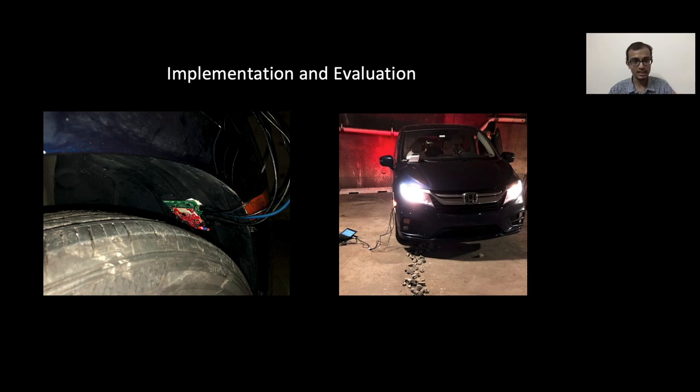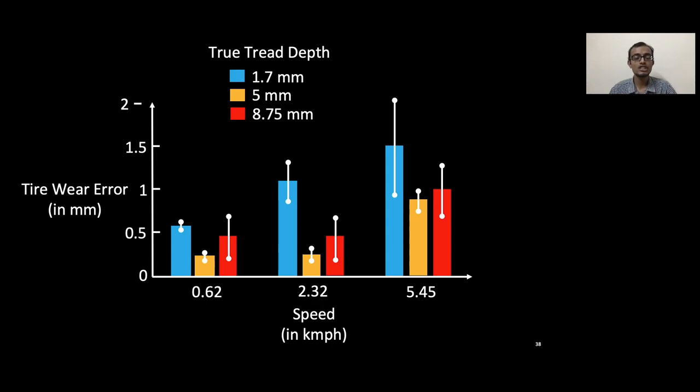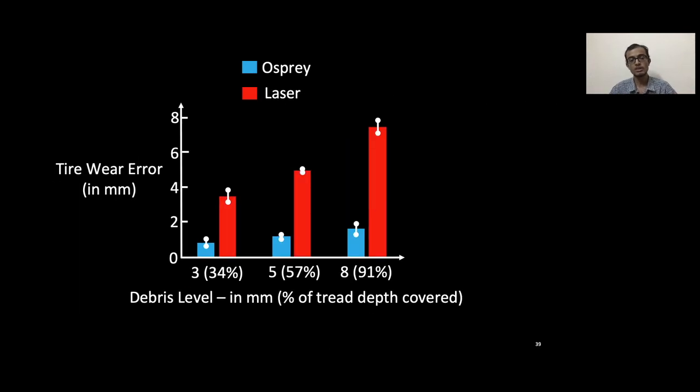Today we would like to discuss two important results. First, the variation of tire wear error across speeds. We vary the speed of rotation all the way from 0.62 to 5.45 kilometers per hour, and the true tread depth from 8.75 mm, which is the default tread depth of the tire, all the way down to 1.7 mm, which is at the legal limit. We see that the tire wear error increases slightly with increase in speed, which is as expected, and more importantly, we see that a maximum mean error of 1.5 mm is observed by our system.